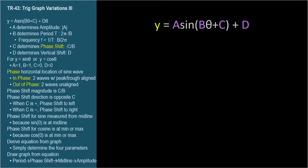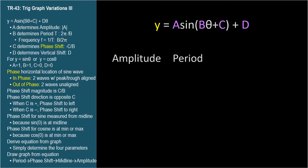The general trig equation has this form: y equals a sine b-theta plus c plus d. The trig function can be sine or cosine. In the two previous videos, we've shown that the a parameter tells us the amplitude of the graphed wave, the b parameter tells us the period, and since period and frequency are reciprocals, b also tells us the frequency. The d parameter is the midline of the graphed wave.